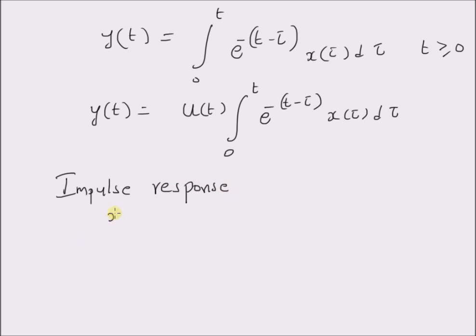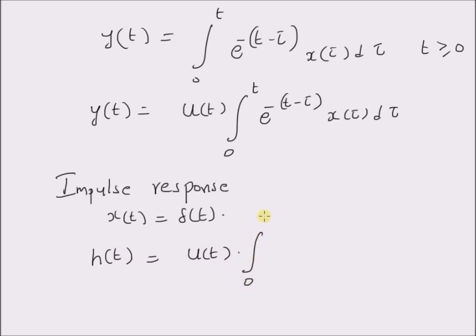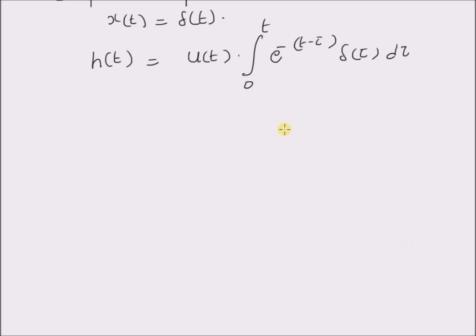We basically assume that the input x of t is equal to delta of t. Then the impulse response h of t is equal to u of t multiplied by the integral from 0 to t of e power minus (t minus tau) delta of tau d tau. By simply using a change of variables, that is t minus tau equals s, so for tau equal to 0, s is equal to t, and for tau equal to t, s is equal to 0, and d tau is equal to minus d s.